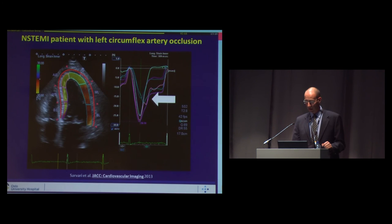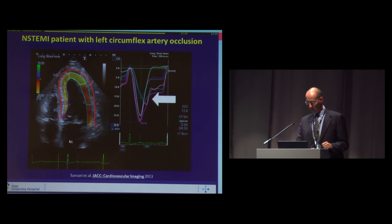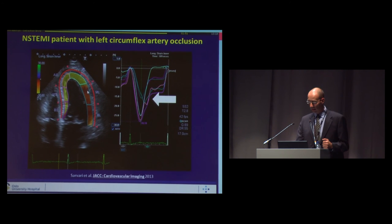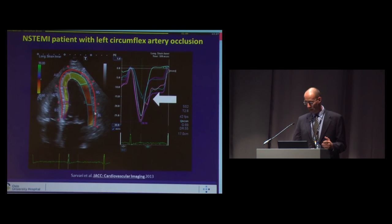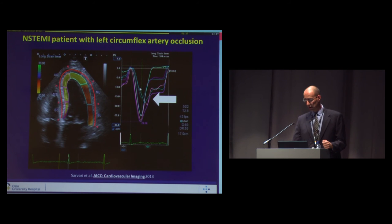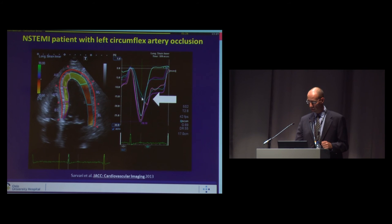Back to our study — this is an example of an NST-AMI patient with left circumflex artery occlusion. To the left, we see the four-chamber view of the heart with the endocardial myocardium as the region of interest, divided into six segments. The segments supplied by the LCX artery show reduced color-coded deformation, while the other segments show normal deformation. To the right, the corresponding endocardial strain curves show that the two LCX segments have reduced maximum myocardial shortening, and one of the segments also shows post-systolic shortening.